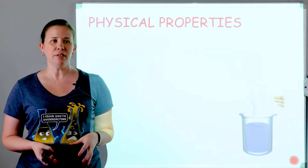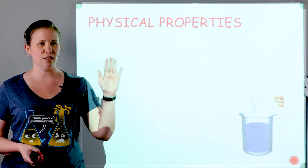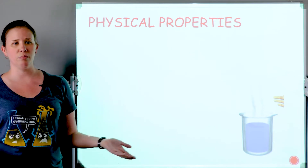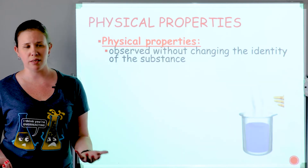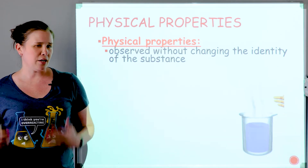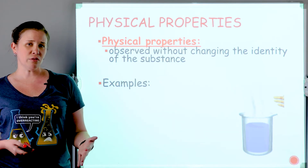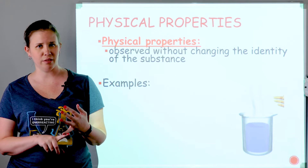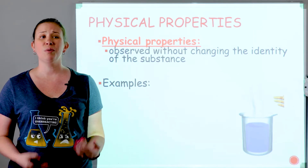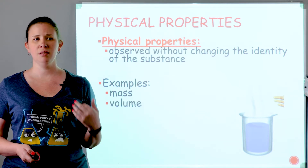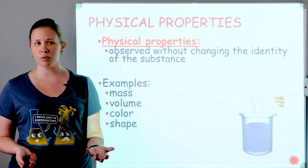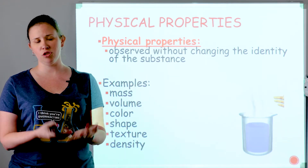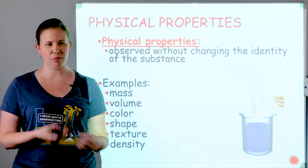The last thing we're going to talk about in Note C is physical properties and changes, and chemical properties and changes. A physical property is something that describes the identity of the substance — something you can observe without actually changing what the substance is. Examples include both quantitative and qualitative physical properties: mass, volume, things we could measure; also color, shape, texture, density — things we can see or calculate. Anything that describes what the substance is without changing it.